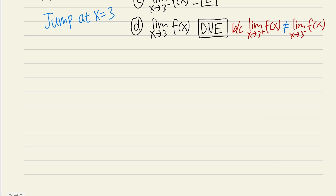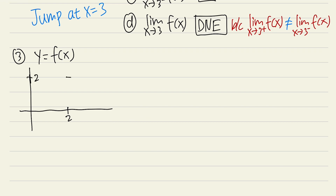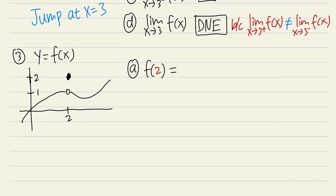For the third example, here's another graph. Let's say we have x = 2, with a closed circle at y = 2 and an open circle at y = 1 on the curve. For part a, what is f of 2? You look at the closed circle — its y value is 2 — so f of 2 equals 2. Here x is exactly equal to 2.